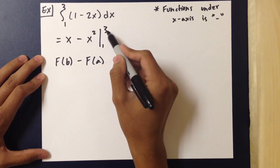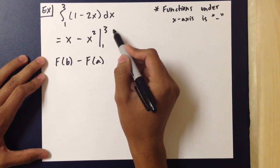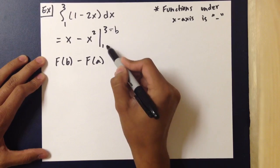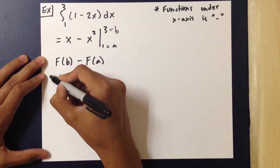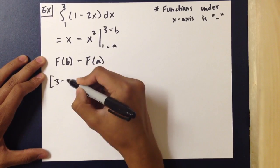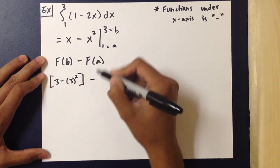So we plug in 3 because that is point B, and 1 is point A. We plug in 3 for x and also plug in 1 for the other.